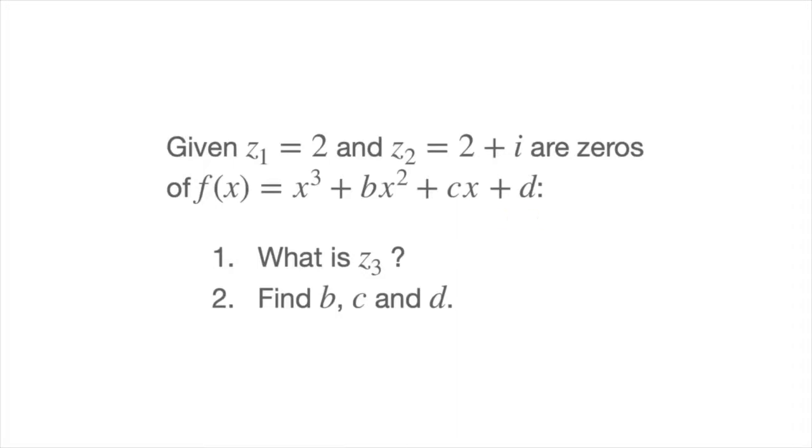And we're asked two things. First of all, we're asked what is z3? In other words, what is this polynomial's third zero? Secondly, we're asked to find the values of the coefficients b, c, and d.